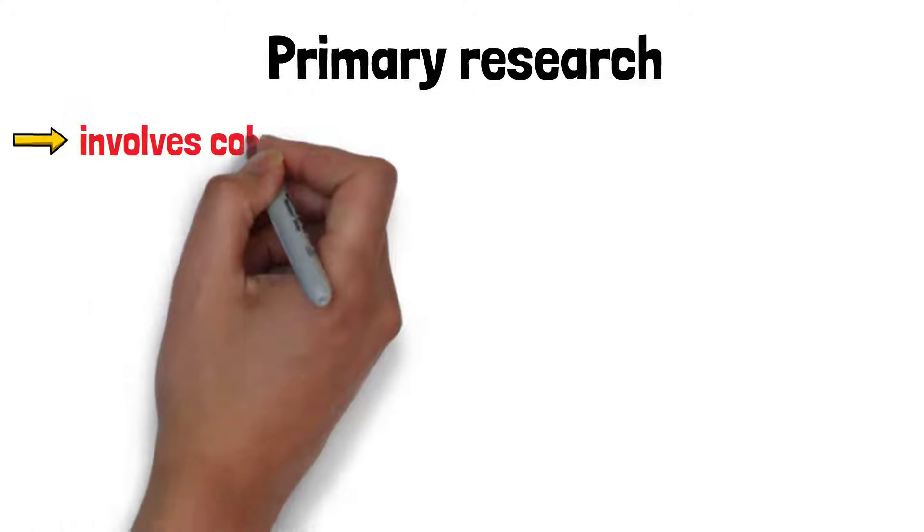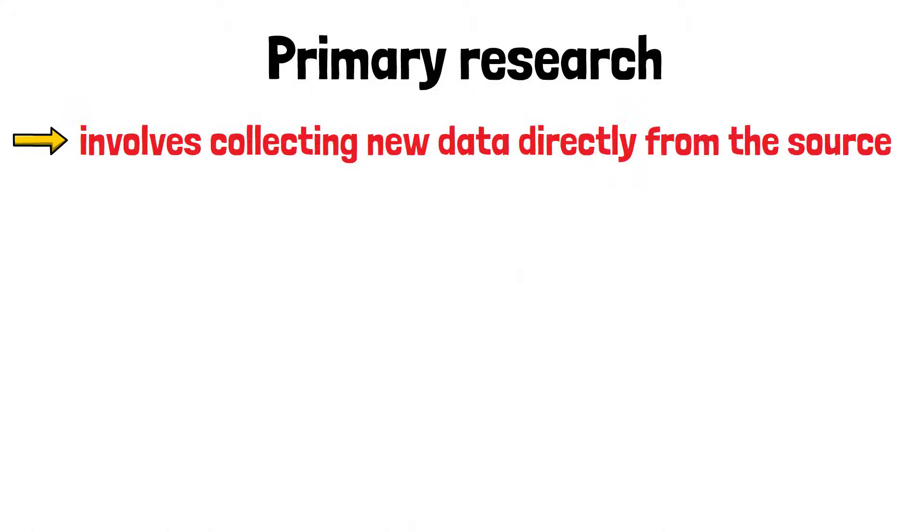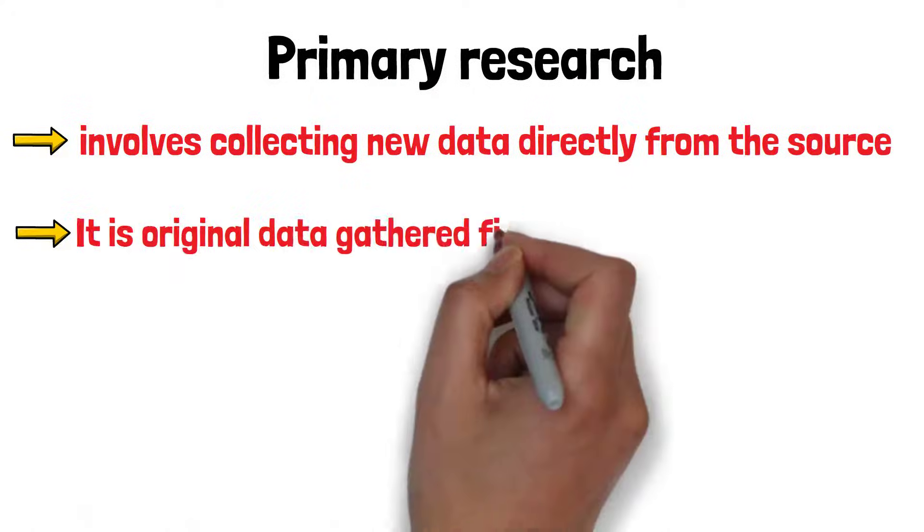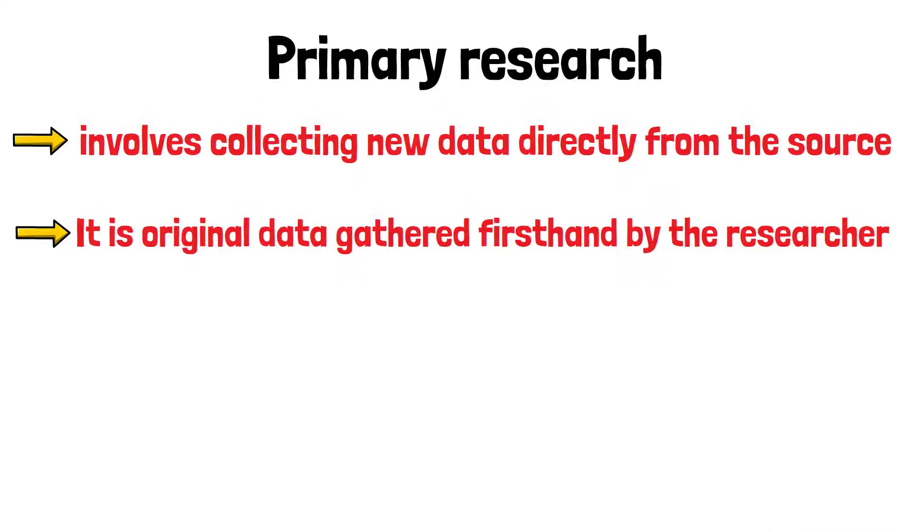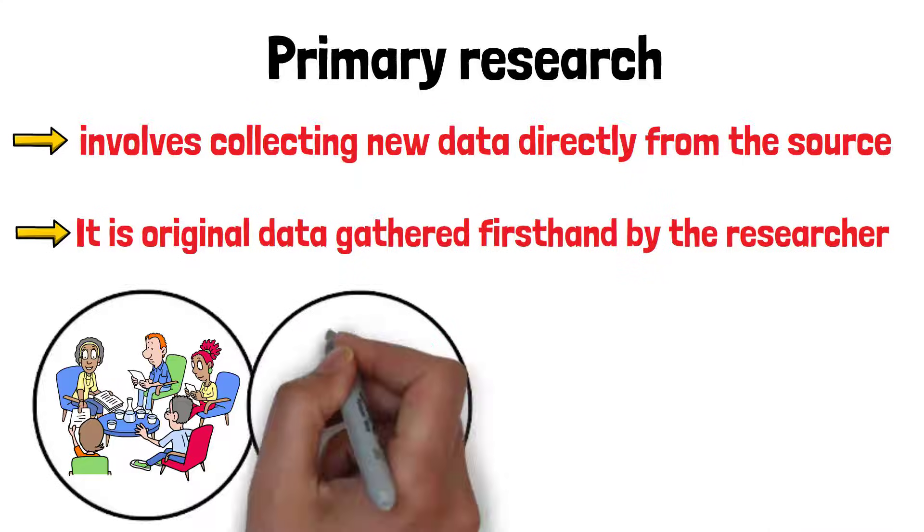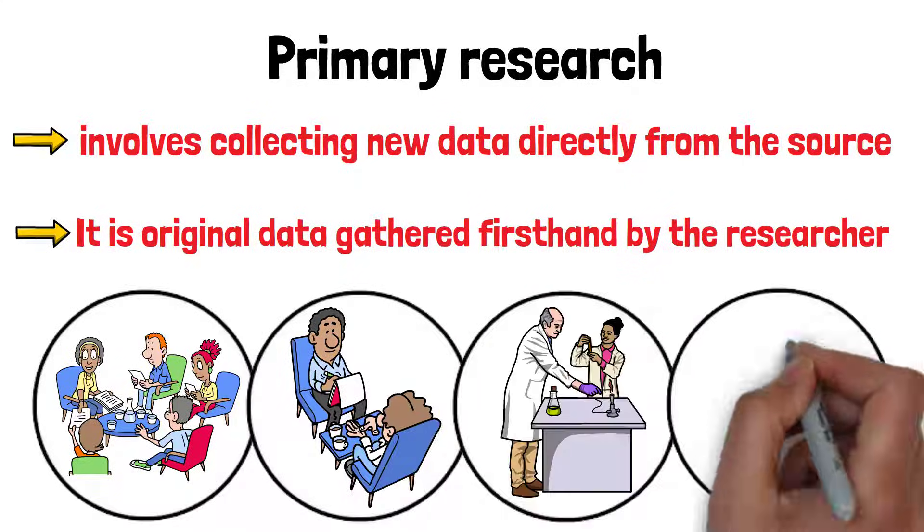Primary research is research that involves collecting new data directly from the source. It is original data gathered first-hand by the researcher, usually through methods like surveys, interviews, experiments or observations.